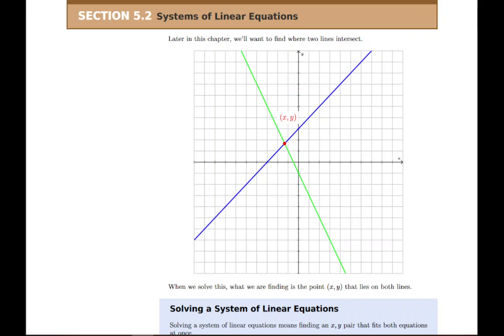In section 5.2, our question revolves around this picture. We want to be able to figure out where two lines intersect, where they cross each other. This will be important later on at the end of the chapter when we start doing the linear programming application problems. There will be times where we need to find the intersection point between two lines, and so to do that, we have several methods.